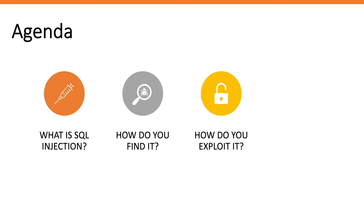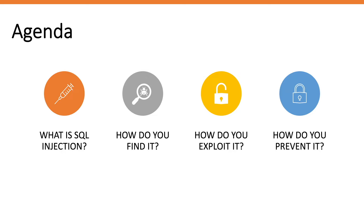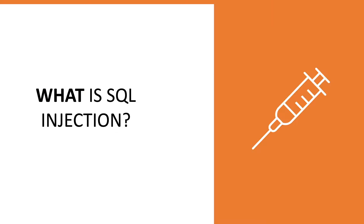Imagine you're testing an application and you discover that one of the input vectors is potentially vulnerable to SQL injection. How do you exploit that vulnerability to gain access to sensitive information or even gain remote code execution on the server? Last but not least, once you've found and exploited a SQL injection vulnerability, what recommendations can you give to the client to remediate the vulnerabilities? We'll cover techniques to prevent SQL injection vulnerabilities.